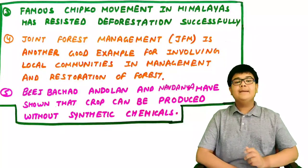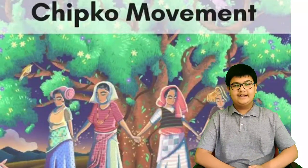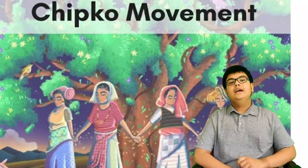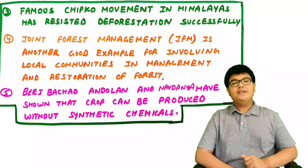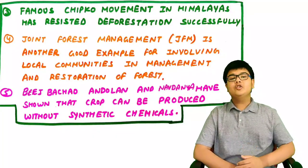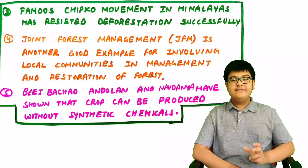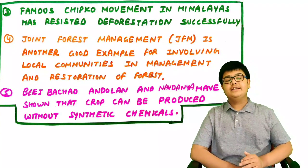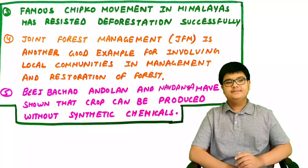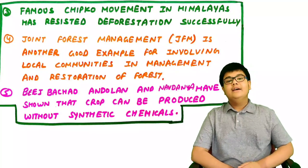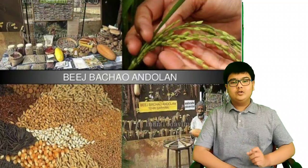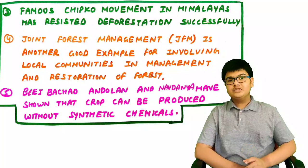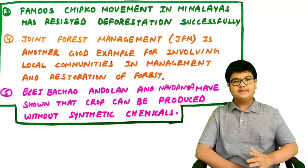Third, the famous Chipko movement in the Himalayas has successfully resisted deforestation. Fourth, joint forest management is another good example in which local communities are involved in the management and restoration of forests. Fifth, the Beej Bachao Andolan and Navdanya have shown that crops can be produced without any synthetic chemicals.